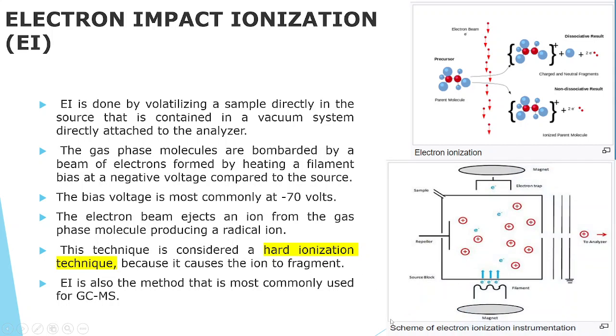Now you can see the instrument of ionization. In this way, the electron is released from the filament, the sample is coming from here and there is a bombardment and the impact of the electron. From the electron's impact in the molecule, positive ions are produced and then the electrons are trapped. The positively charged ions repel from the repeller to the analyzer and the whole system is kept under two magnets. So this is the scheme of electron ionization instrumentation.